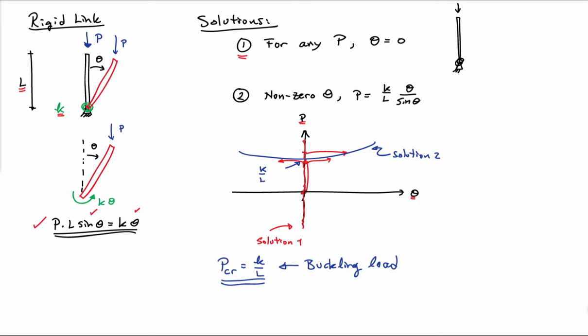The way we decide what's stable and unstable is by looking at the potential energy. So the potential energy of the system has the potential energy of the spring plus the potential energy of the load. The potential energy of the load in this case is going to be minus PL times one minus cosine theta.